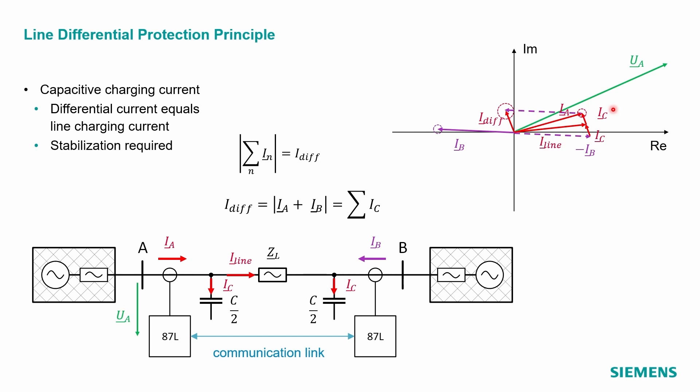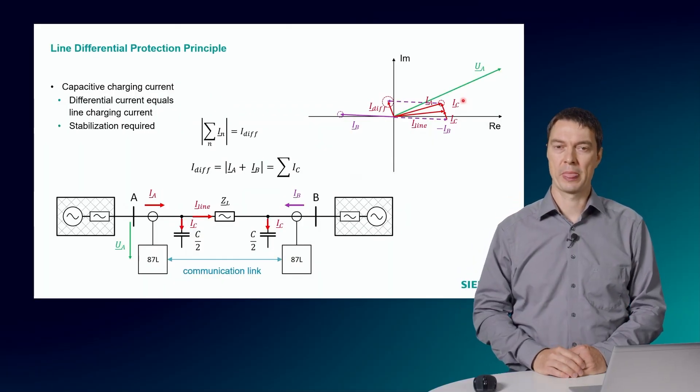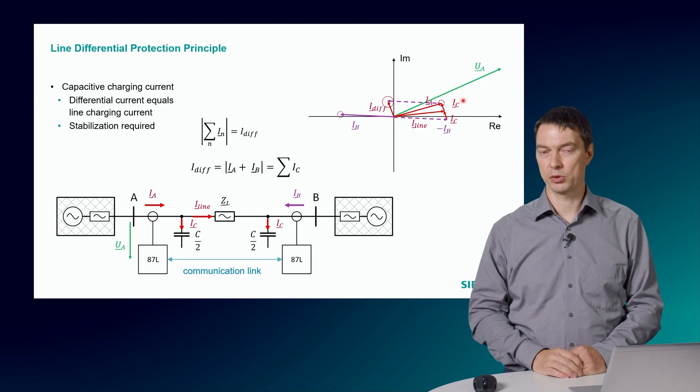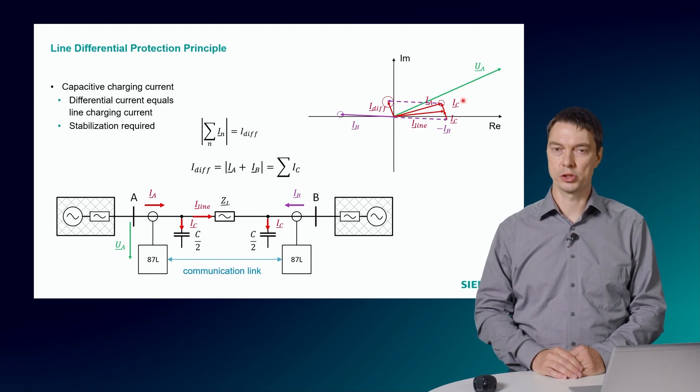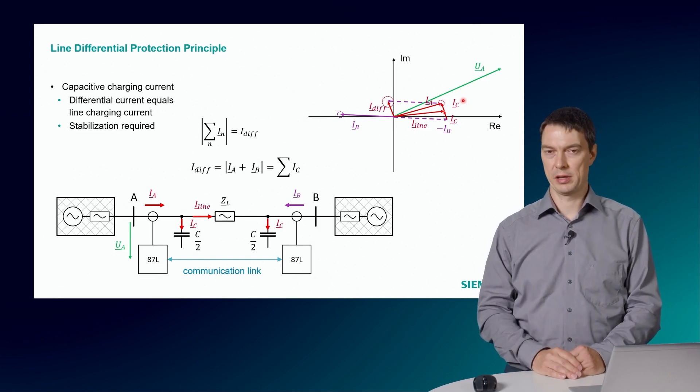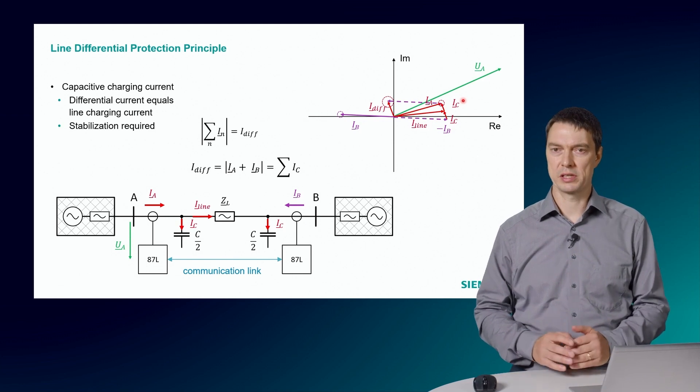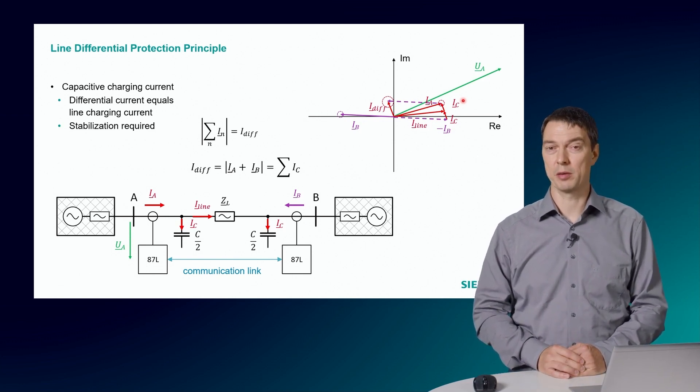This will result in quite a significant differential current, which is the charging current of the line. This needs to be considered for the relay setting. The minimum differential current pickup threshold must be set higher than this expected charging current. Many relays in the market also provide a capacitive charging current compensation. This requires a local measured voltage and will subtract the calculated charging current. The relay becomes more sensitive to low-fault currents but also requires a reliable voltage signal.